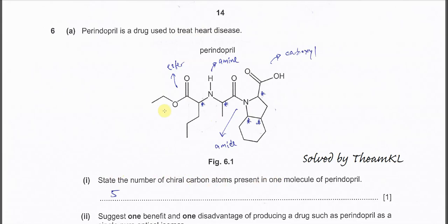Very easy. By now you should be able to identify the chiral carbon. So this is the first chiral carbon because it has four different groups: one group, two group, three group, and another H.